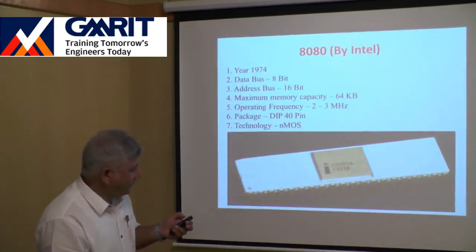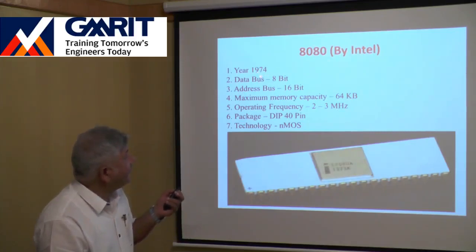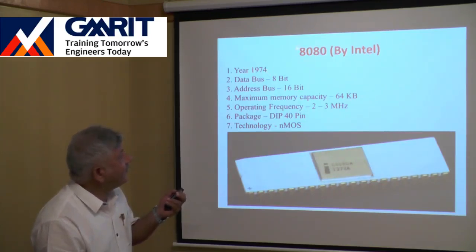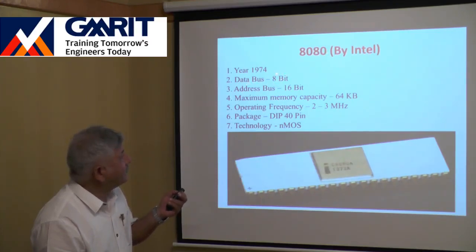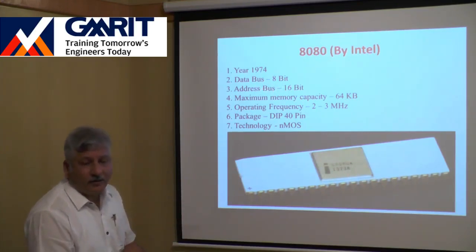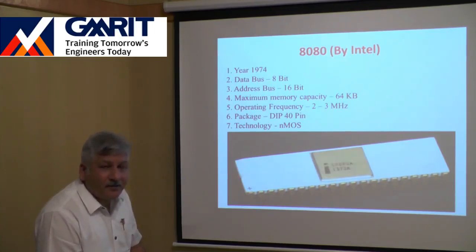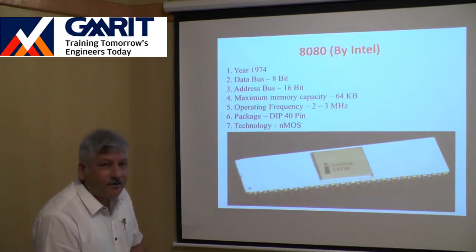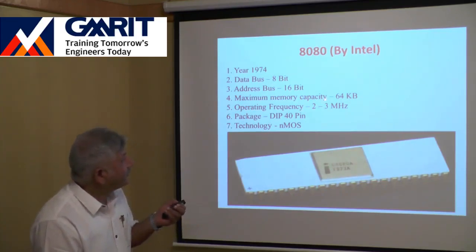After the 8008, two years later Intel launched the 8080 processor. The data bus remained 8-bit, but the address bus was increased from 14-bit to 16-bit, raising the maximum memory capacity from 16 KB to 64 KB.